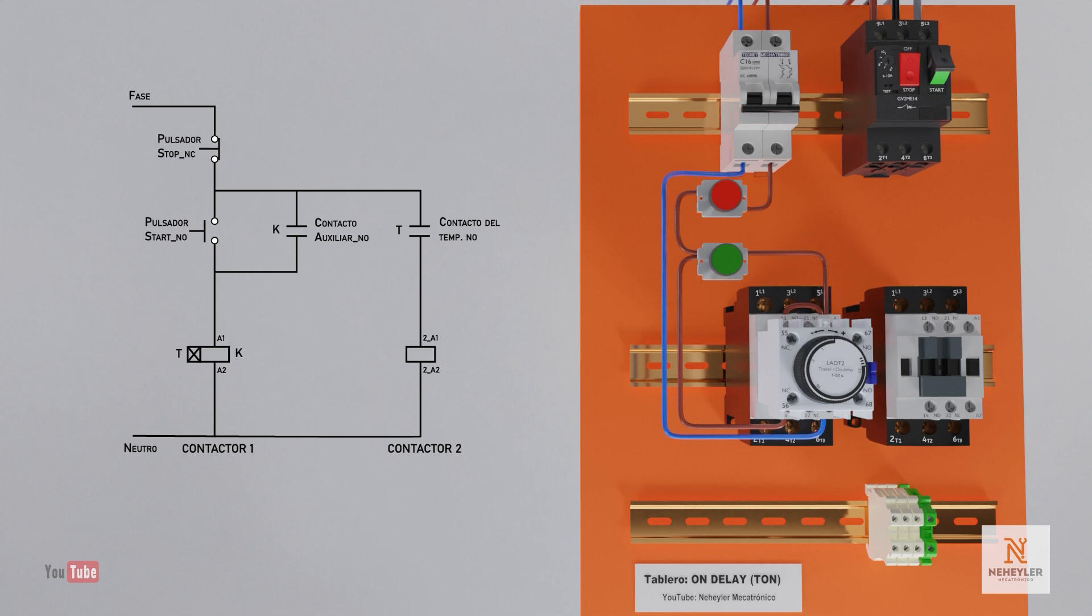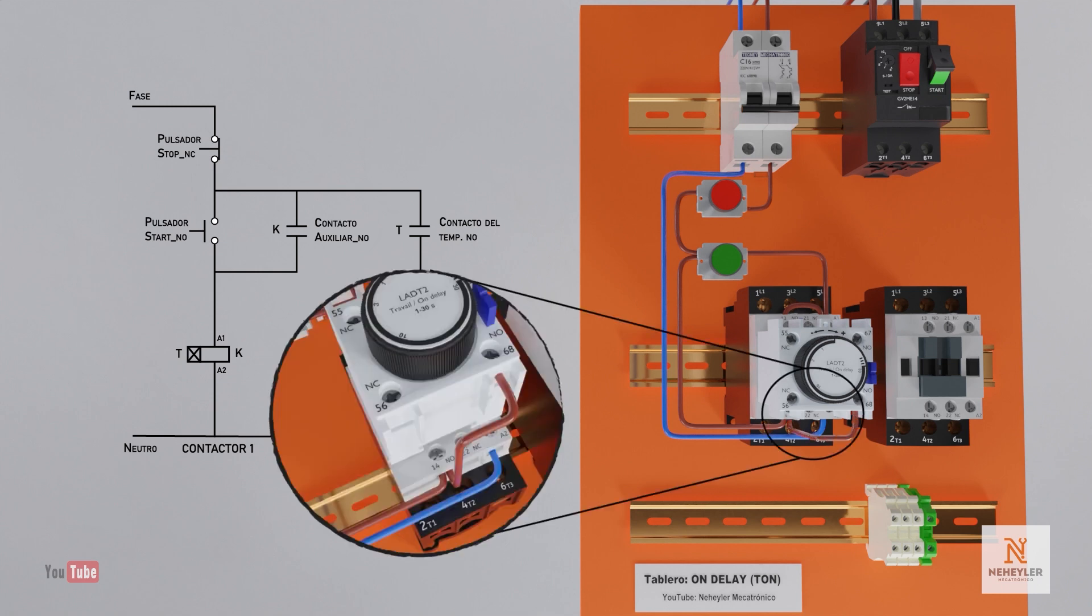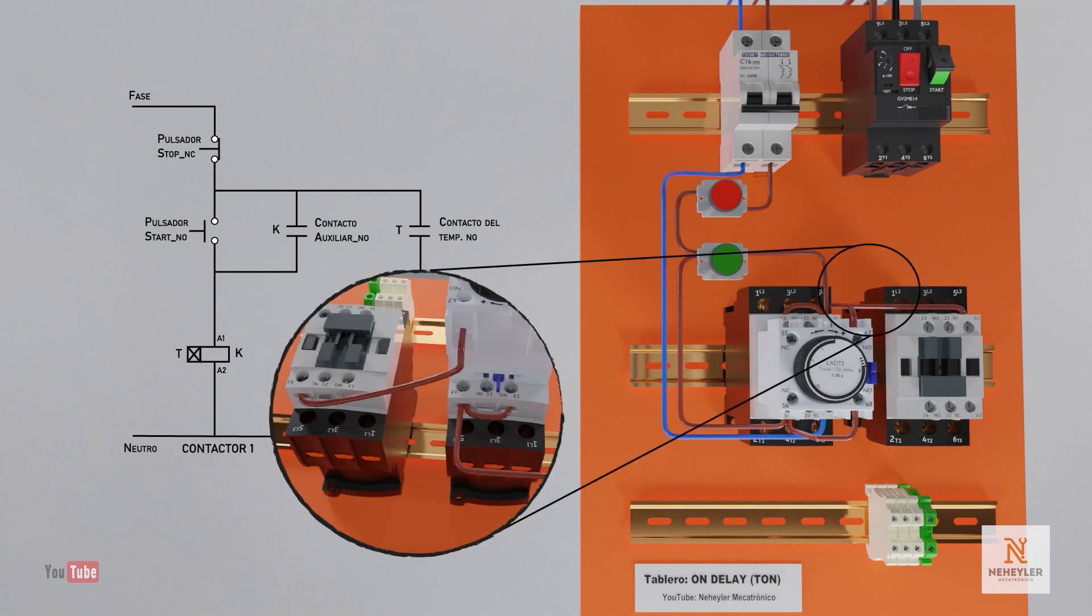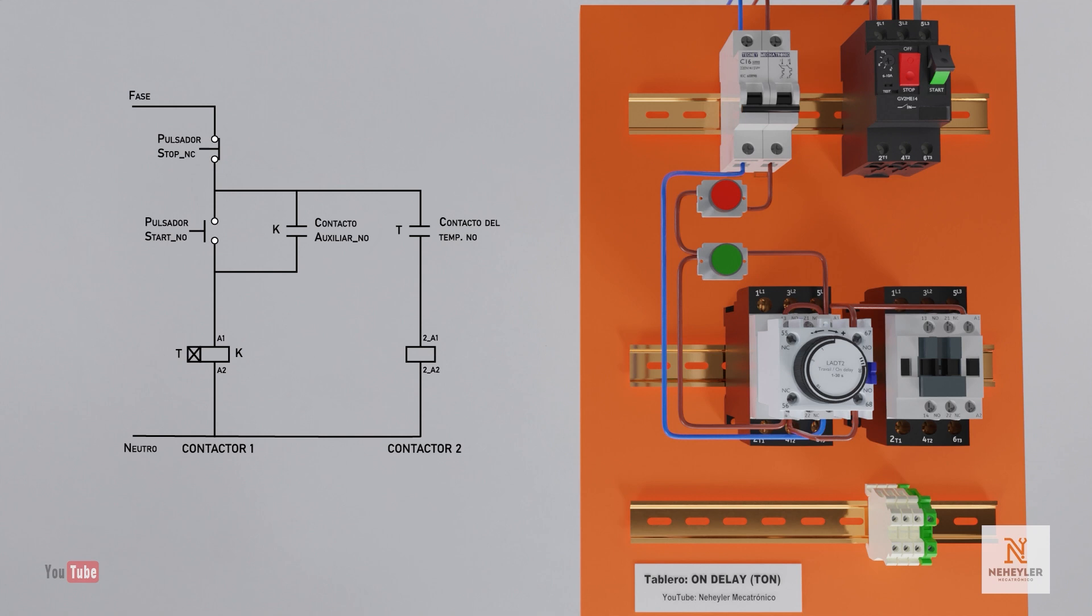From the cable that is connected between the buttons it is connected and led to contacts 67 and 68 of the timer, which is a normally open contact. And later it is taken and connected to terminal A1 of the second contactor coil. We finish the circuit by connecting from terminal A2 of the second contactor to the neutral wire.